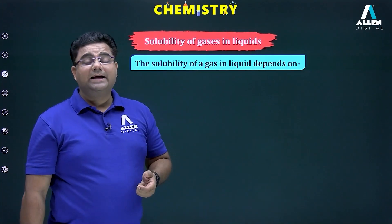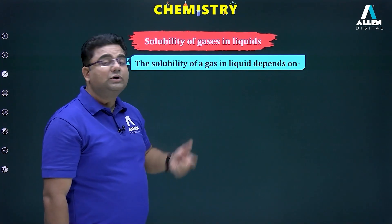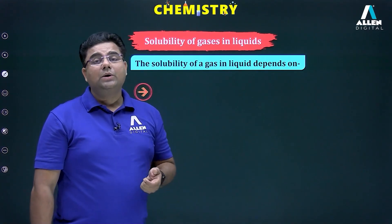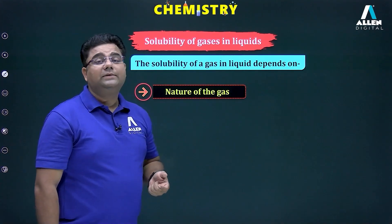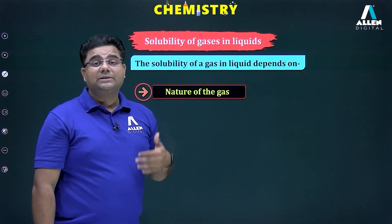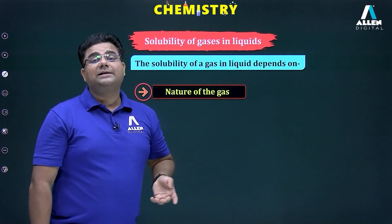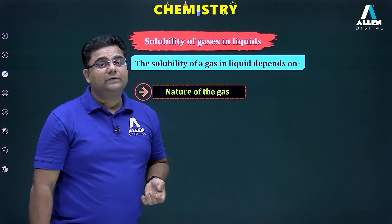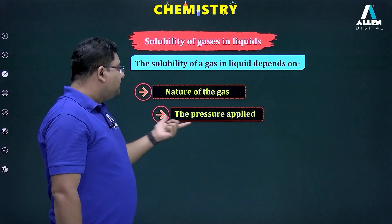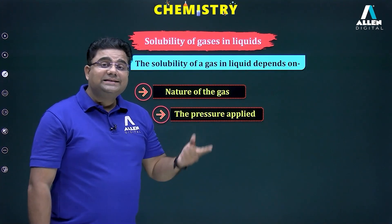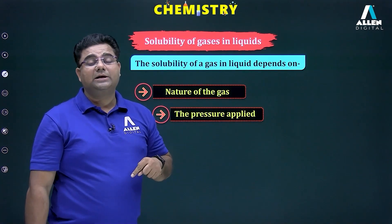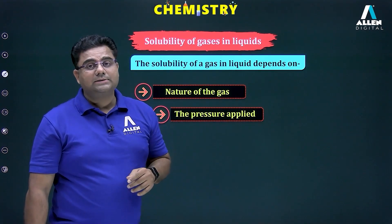Next, we discuss the factors affecting the solubility of gases in liquid. The first factor is the nature of the gas — for example, carbon dioxide is moderately soluble in water, whereas nitrogen is least soluble in water. The second factor is pressure: increasing pressure increases the solubility of the gas in liquid, and decreasing pressure decreases it.